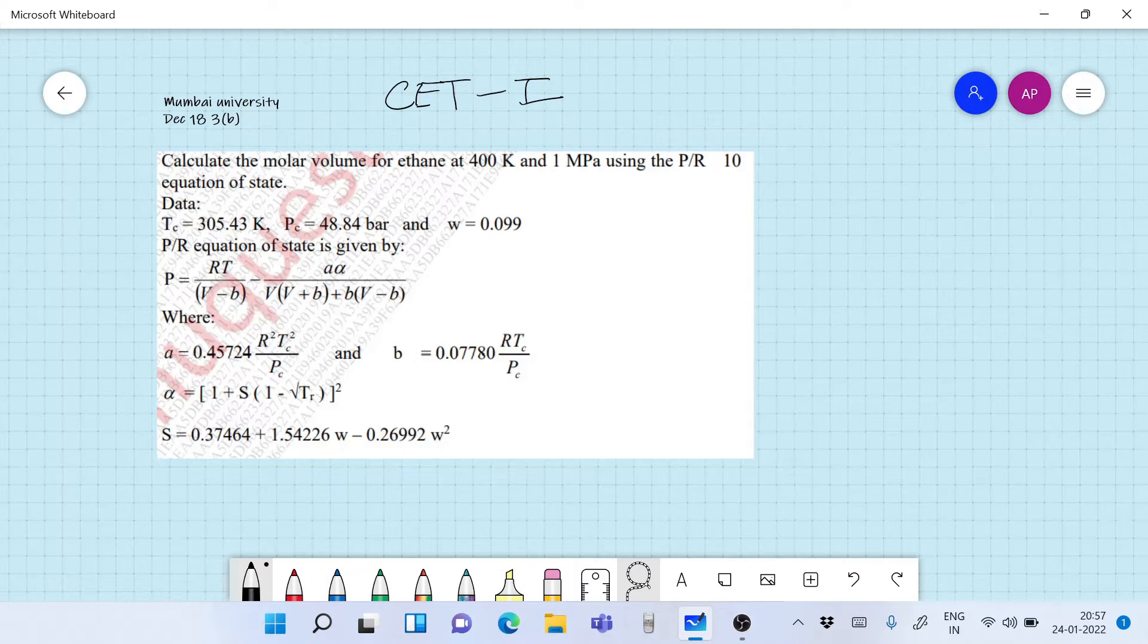It says calculate the molar volume of ethane at 400 Kelvin and 1 megapascal using the Peng Robinson equation of state. The Peng Robinson equation of state is given and all the constants, how do you calculate the constants, that is also given. Now we need to find the molar volume. That's a pretty simple question for 10 marks and it can be easily solved within 5 minutes. Let's go ahead with the solution.